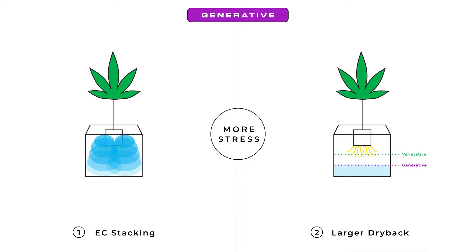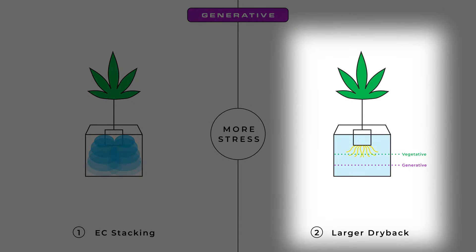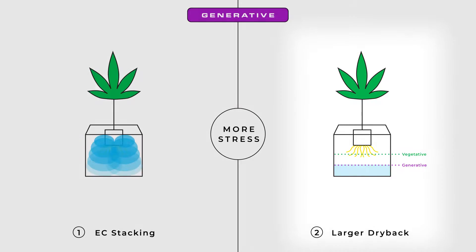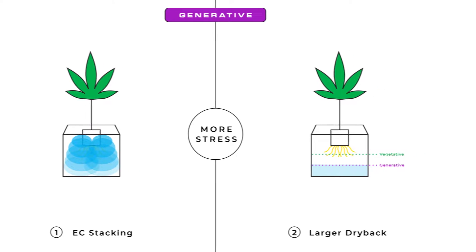A larger dryback is done by ending irrigation events earlier in the day to give the substrate more time to dry out. Both techniques will initiate a stress response in our plants by increasing the EC in our substrate.